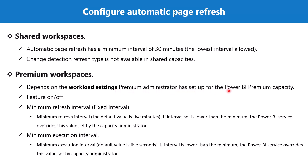The Power BI Premium capacity administrator has three variables they can control. The first is whether the feature is turned on or off. The second pertains to the fixed interval.